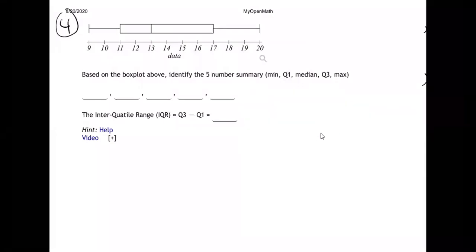All right, so on this one they're giving us a box plot. This will be easy, and they're wanting us to do the five-number summary. That's a piece of cake.